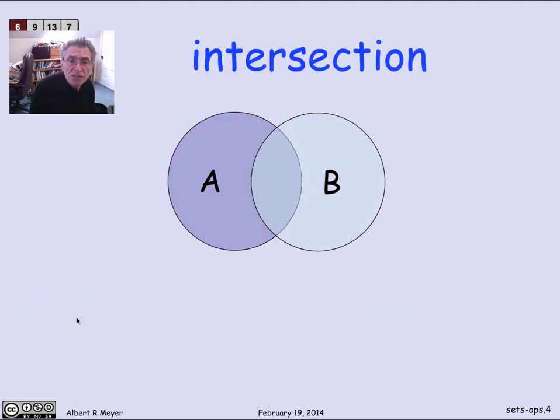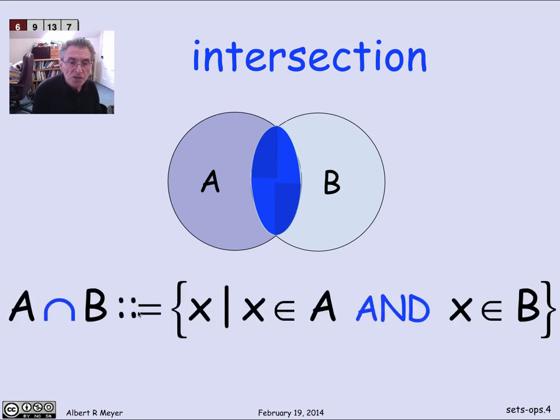Next basic operation is intersection where, again, it's the points that are both in A and B, the points in common, which are now highlighted in blue. So the definition of A intersection B, we use an upside down union symbol for intersection. It's the set of points that are in A and are in B.